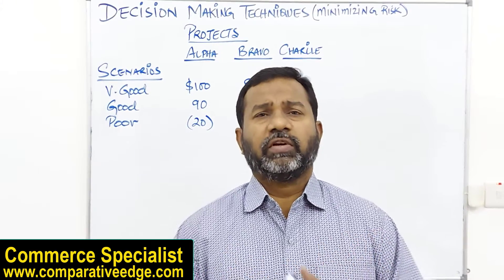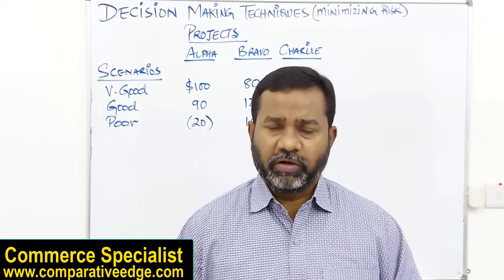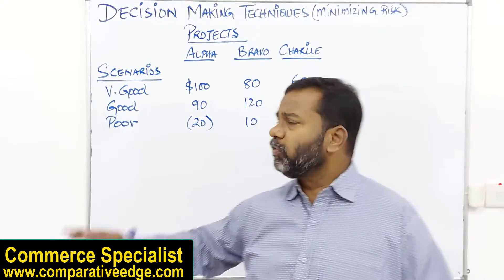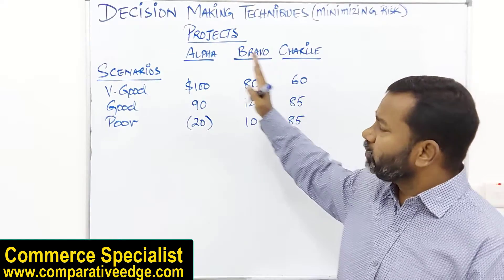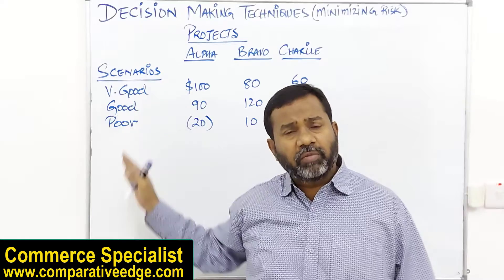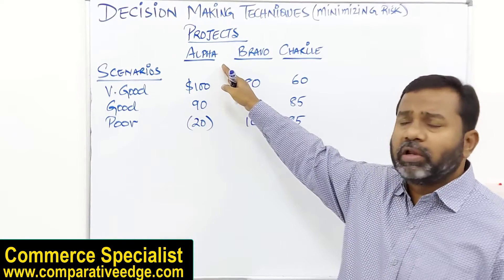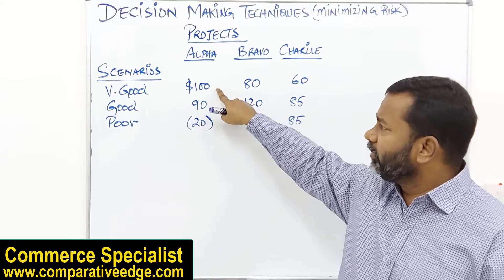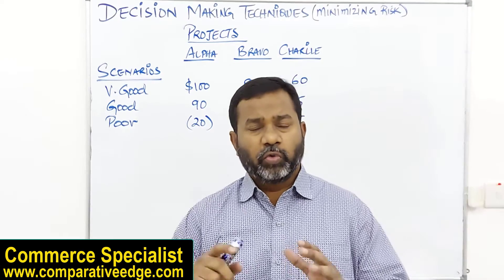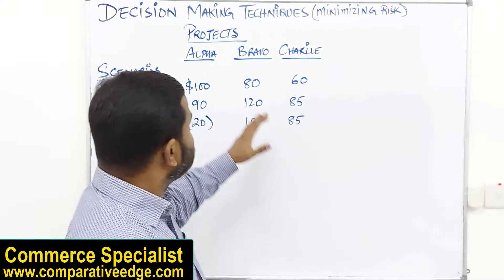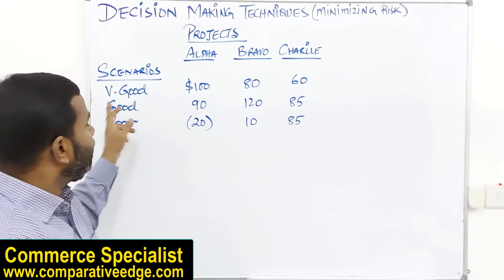When we do decision-making under uncertainty and when there is a lot of risk, we use three different methods: MaxiMax, Maximin, and Minimax Regret Rule. If you look at this table, there are three different projects — Alpha, Bravo, and Charlie — and three different economic scenarios. When the economy is very good, project Alpha will earn a profit of $100; when good, $90; and when poor, a loss of $20. Likewise, profits for Bravo and Charlie are given for three different economic situations.